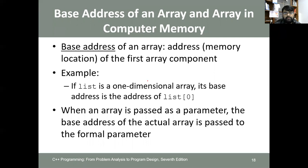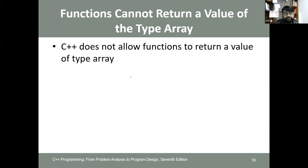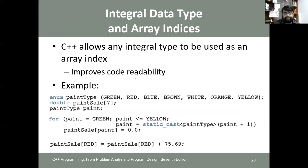The base address of an array is the address of the first array component — the memory location of list[0]. When an array is passed as a parameter, the base address of the actual array is passed to the formal parameter. C++ does not allow functions to return a value of type array — it only passes the address of the first component.